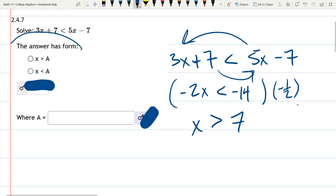And this actually is in the right form with x on the left. So we are greater than a, so it's the first choice right there. And a is just 7 right there.